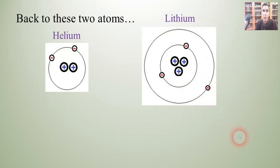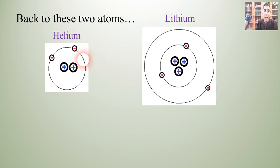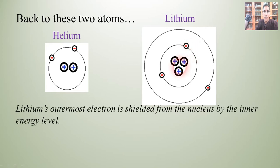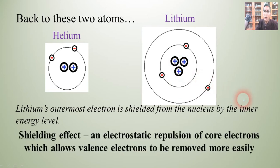Now let's go back to the two atoms we had on the screen earlier — helium and lithium. If we think about what's happening in lithium, we have this outermost electron which is going to be able to leave much more easily. But what's happening is these two inner electrons — those core electrons — are repelling each other, which is what electrons do. Those two inner electrons are basically repelling each other and creating kind of a shield, shielding that outermost electron from the attractive force of those three protons. In chemistry, this is something we call the shielding effect.